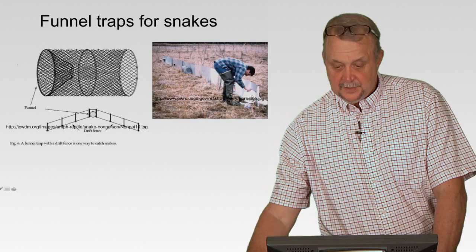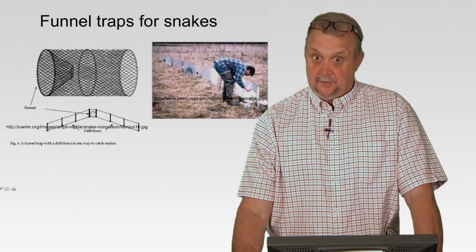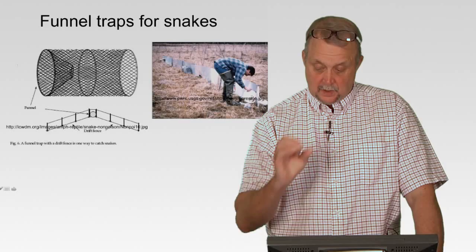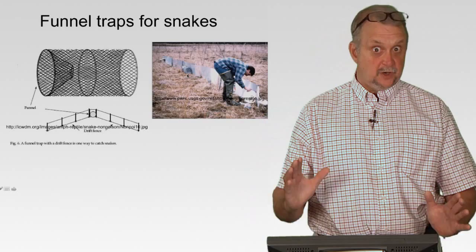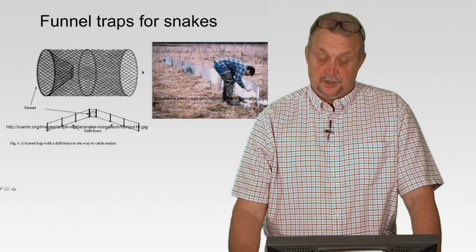The funnel traps for snakes — this gentleman is using aluminum, which is what I used for about the first two months of my study. It's a great fence — very sturdy — you can almost hammer it into the ground. But if it's a windy area, the wind will take it. That's why I eventually went to hardware cloth, what they call hardware cloth with very small holes. The aluminum works really well in calmer conditions.